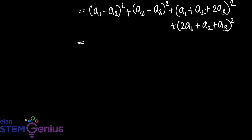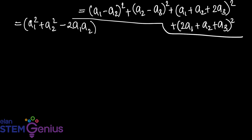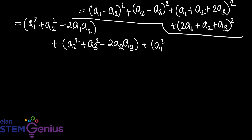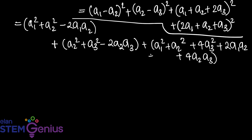Expanding the squared terms: (a2 minus a3) squared equals a2 squared plus a3 squared minus 2a2a3. Then we expand (a plus b plus c) squared for the substituted terms to get a1 squared plus a2 squared plus 4a3 squared plus 2a1a2 plus 4a2a3 plus 4a1a3, and 4a1 squared plus a2 squared plus a3 squared plus 2a2a3 plus 4a1a2 plus 4a1a3.